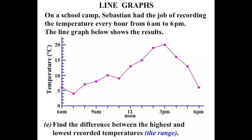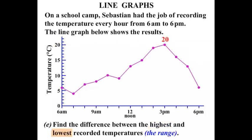Find the difference between the highest and lowest recorded temperatures — this is known as the range. The highest point, reading across, is 20 degrees. The lowest point, reading across, is 4 degrees. The difference between 20 and 4: we do the subtraction — 20 minus 4 is 16. So the range, the difference, is 16 degrees Celsius.